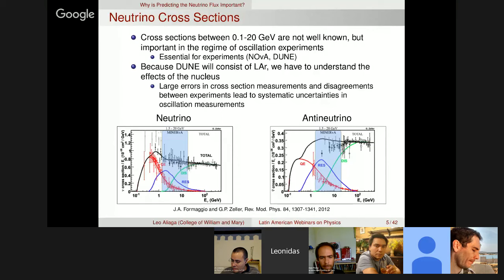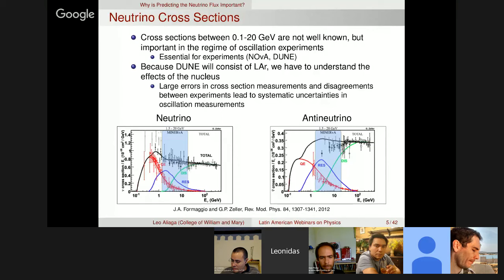There are many details and a big debate. One reason can be different definitions used in the neutrino community to define channels. Another is that some experiments don't correctly understand nuclear effects. A third possibility is the flux — maybe some experiments understood the flux differently or incompletely, leading to disagreements. Any cross-section depends strongly on the flux: if the flux is 20% off, the cross-section is 20% off. This work's extension is interesting because we now understand our flux precisely, and after my thesis defense I want to compare with other experiments to find sources of discrepancy.